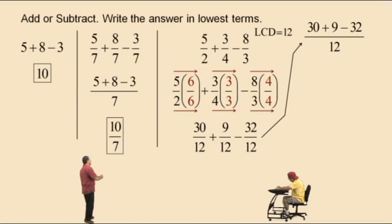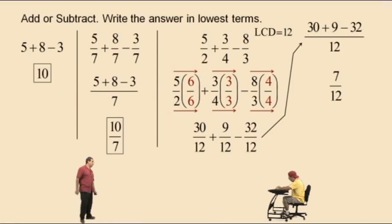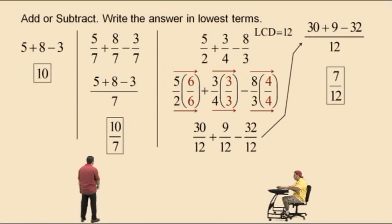4. So we get 39 subtract 32 is 7, and the answer is 7 twelfths. Whew — that was a tough one, right! All right Charlie, let's go to our next one.